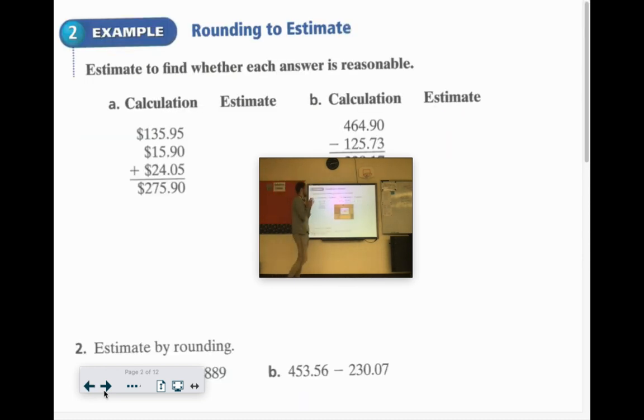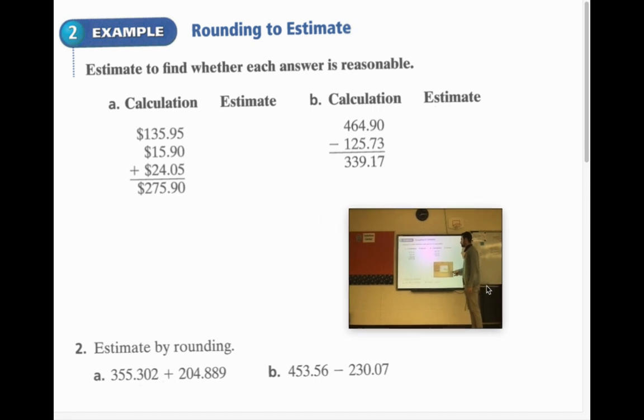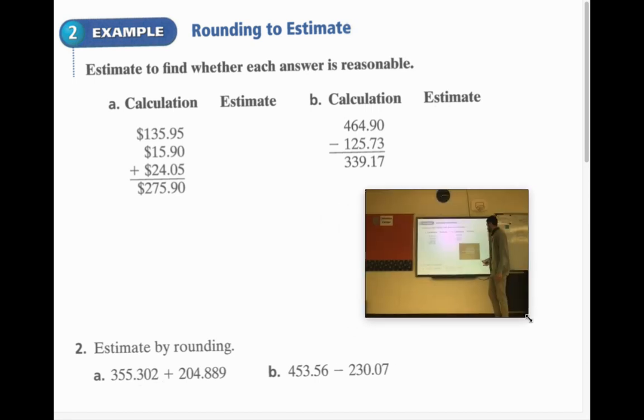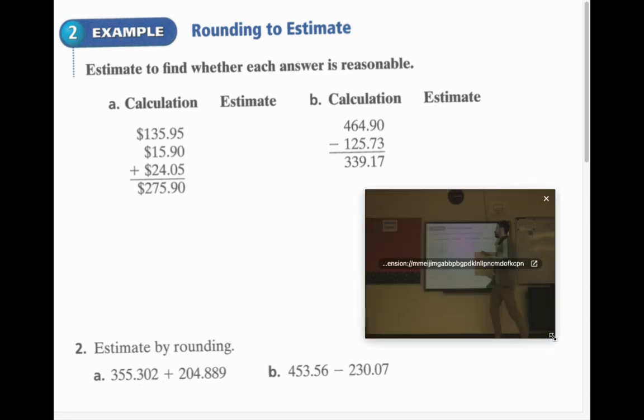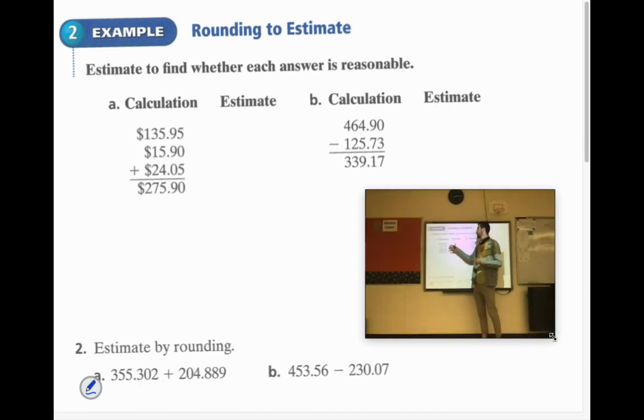Now, estimating. Estimate to find whether each answer is reasonable. So they did 135.95 plus 15.90 plus 24.05. They came up with $275.90. So let's use some estimation and see if we can see if that answer is reasonable. So 135, let's just make it like 140. That's pretty close, right?